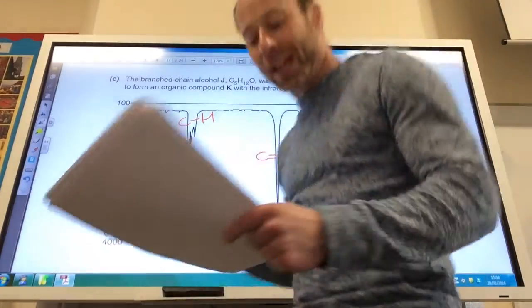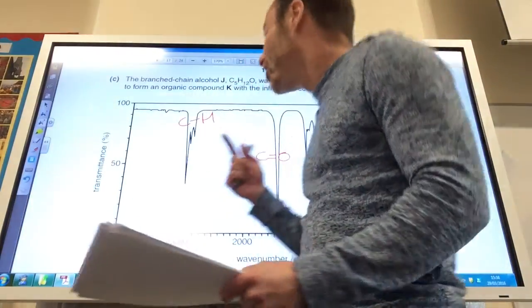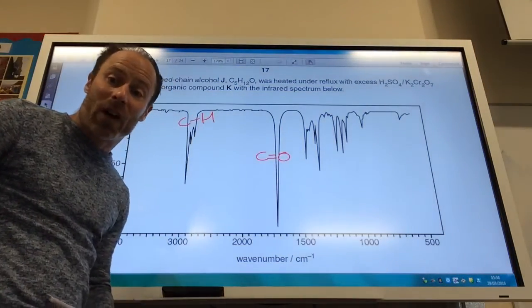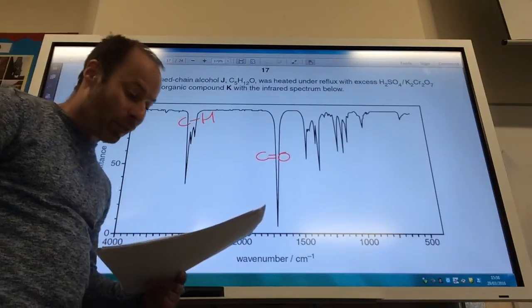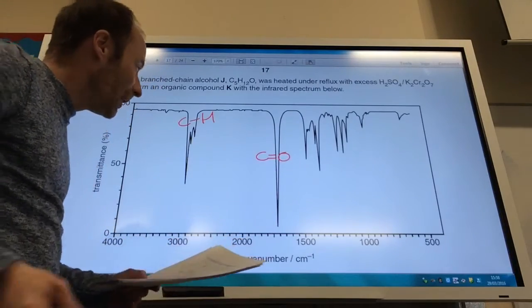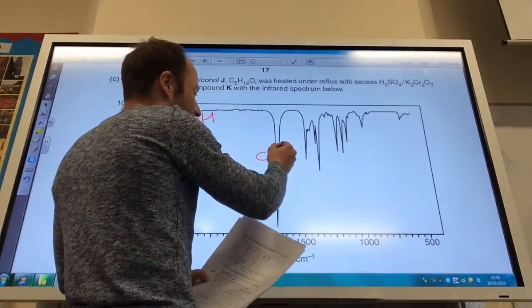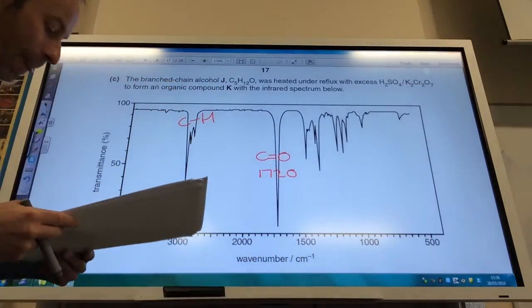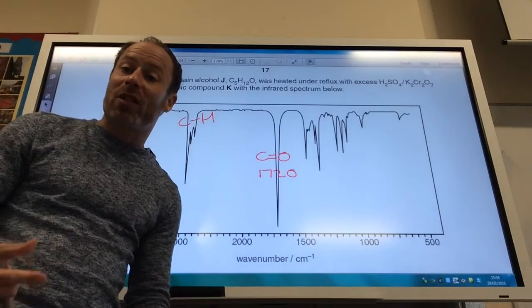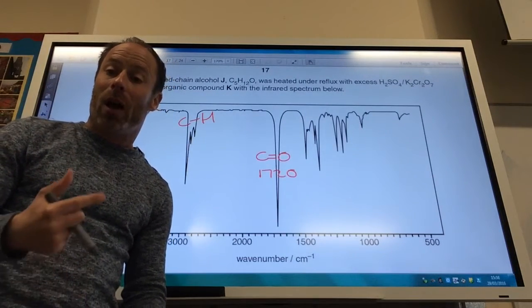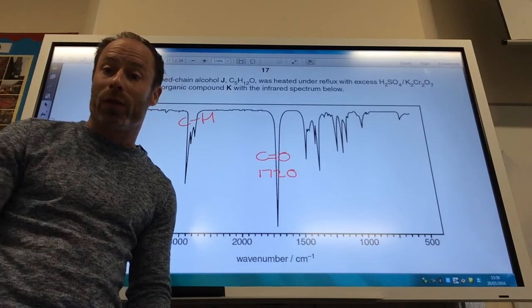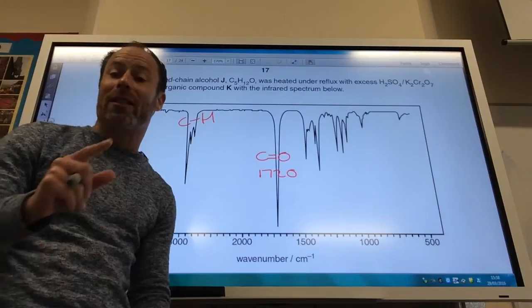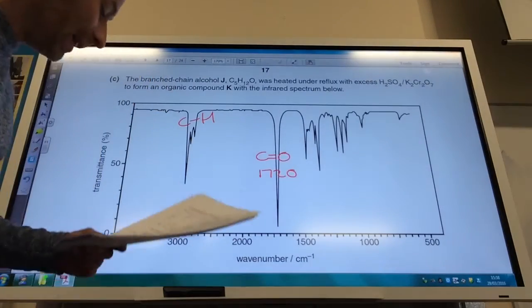Heated under reflux has produced a ketone because there's no OH from an acid, and that would have occurred between 2500 and 3300. There is only a C double bond O for a ketone at 1720. Therefore, I must have started with a secondary alcohol. A primary alcohol would have gone to a carboxylic acid. A tertiary alcohol would not have been oxidized.